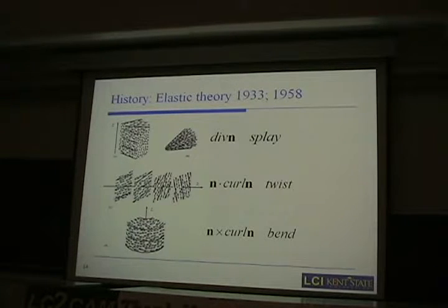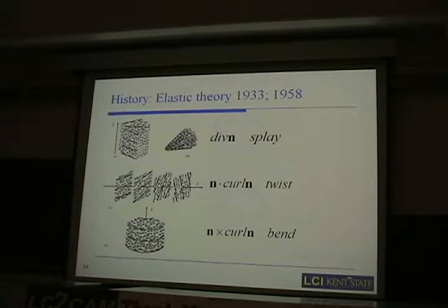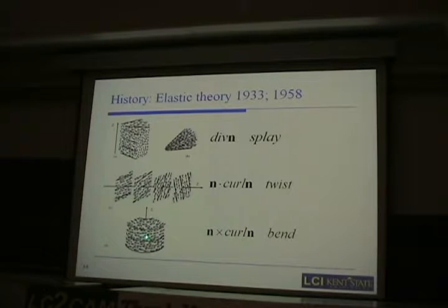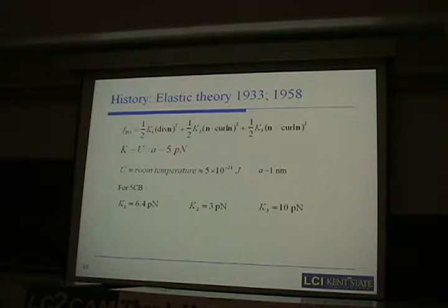These three terms are: divergence of n squared (splay), n dot curl n squared (twist), and n cross curl n squared (bend). Splay is like spreading your fingers — the director field spreads outward. Twist is what we see in cholesteric crystals, which are a pure example of the twist deformation. Bend is the final deformation mode, where the divergence of n and the scalar product n dot curl n are zero, and only the vector product n cross curl n is nonzero. The corresponding elastic constants are K1, K2, and K3.